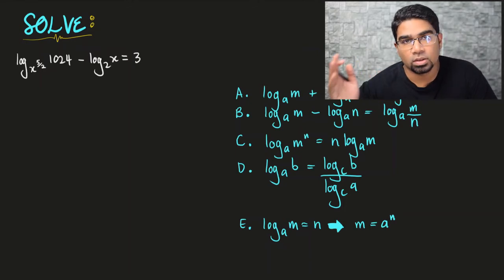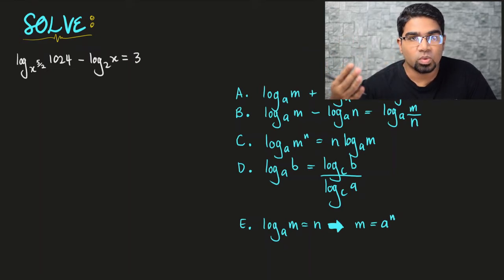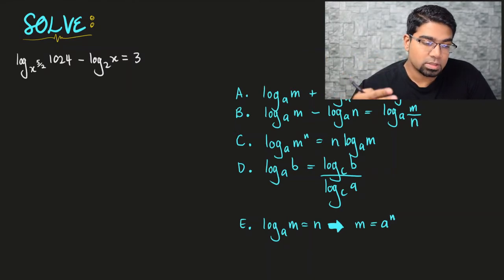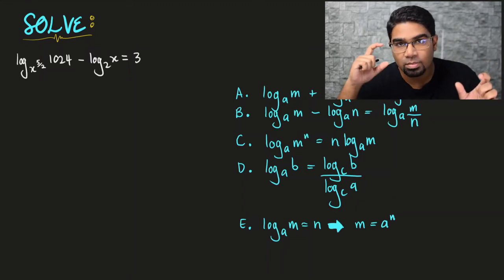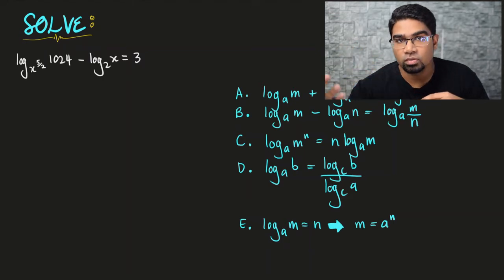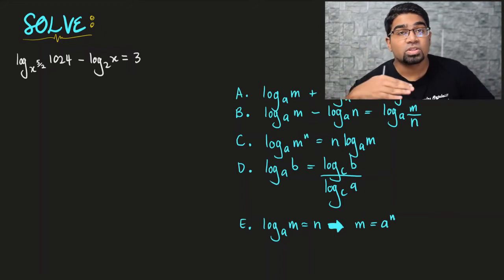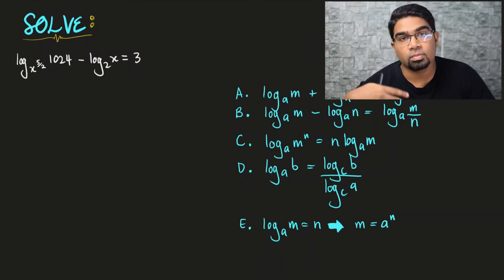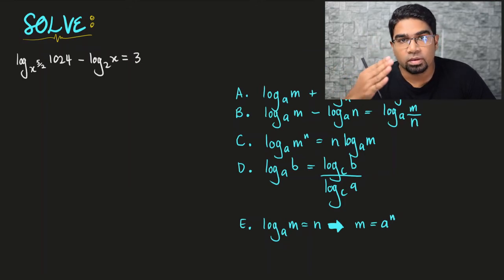When you look at a question like this, on the left side of the equation we have two log terms and on the right side we have one number. The general direction we want to go is to find a single log value on the left side and a single number on the right side, so that we can change to index form and solve. There's a lot of trial and error involved — our goal is just to simplify as much as we can.